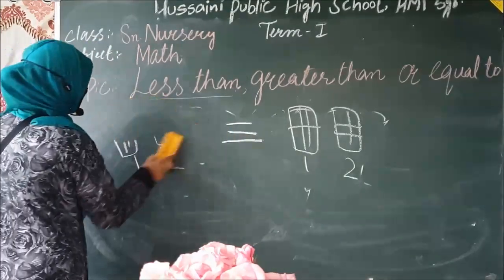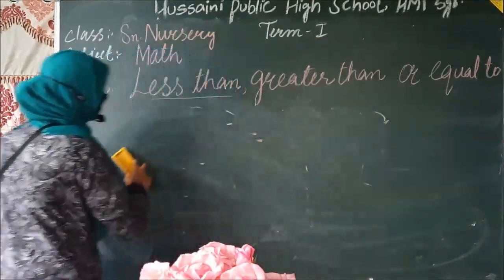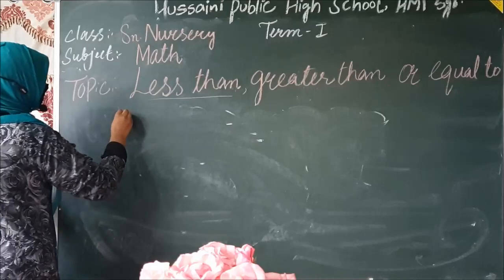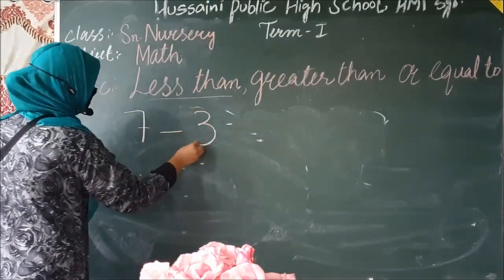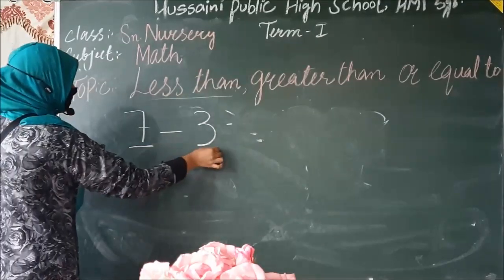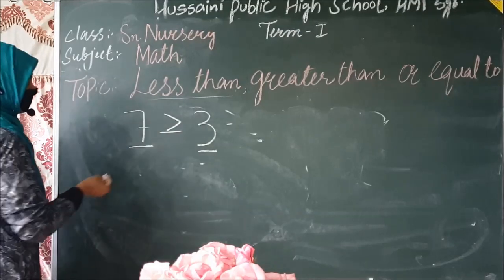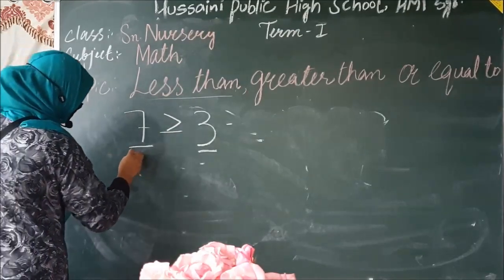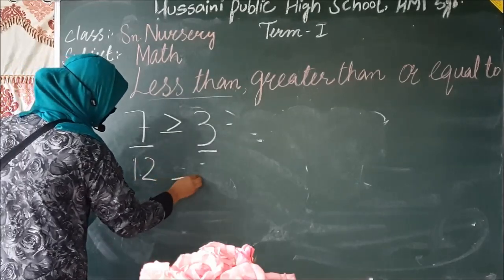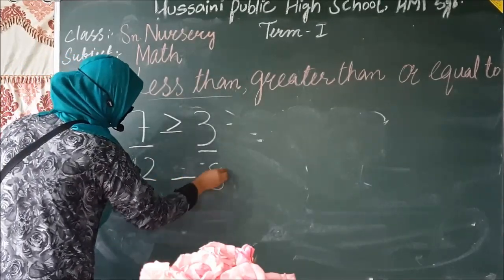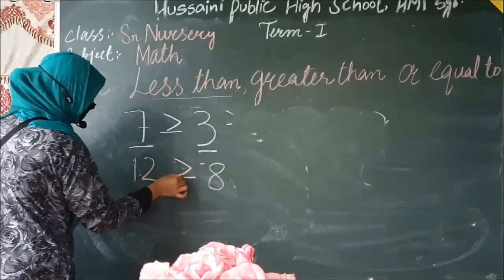मुझे उम्मीद है कि आपको ये examples से समझ आया होगा। इसके बाद हम numbers लेंगे। Seven और three — seven है three से बड़ा, तो हम greater than की sign लगाएंगे: seven is greater than three। इसके बाद 12 और eight — 12 जो है ये eight से बड़ा है, तो 12 is greater than eight।